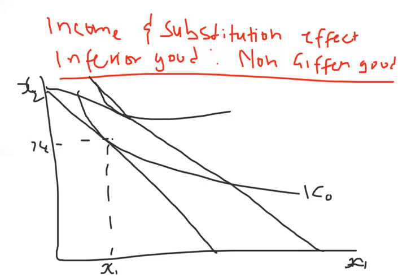I'll call this new indifference curve IC1. Now, because there's a fall in price our real income has sort of increased and we can buy more of x1. The idea in this case is to compensate the person by deducting part of their income, reducing it until the utility they derive is the same as before the change in price. So the new budget constraint shifts inwards or leftwards until it reaches that point.